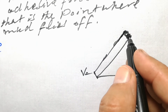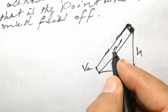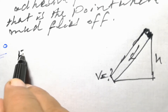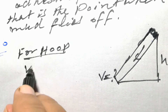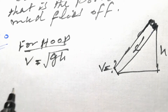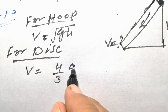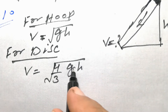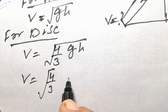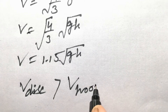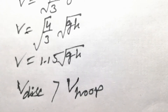For the hoop, the velocity at the bottom is √(gh). For the disk, the velocity is √(4/3 × gh), which simplifies to approximately 1.15√(gh). This confirms that the velocity of the disk is greater than the velocity of the hoop.